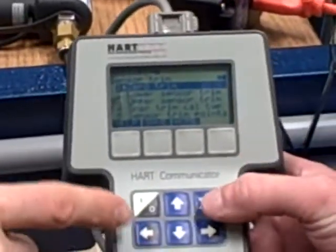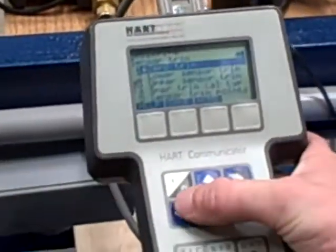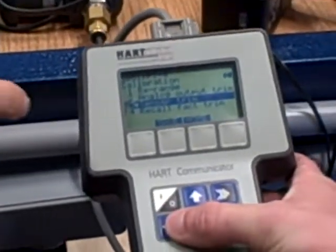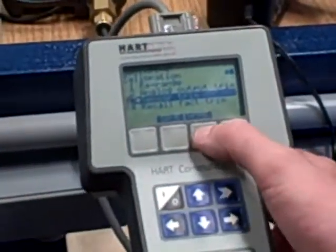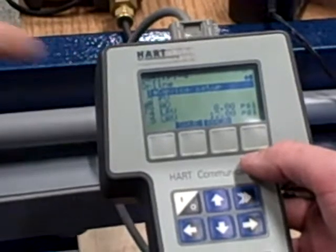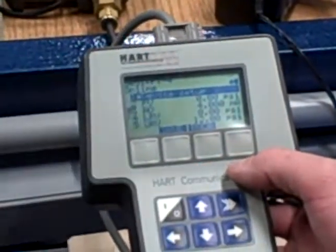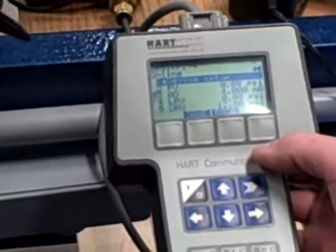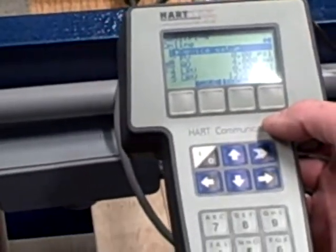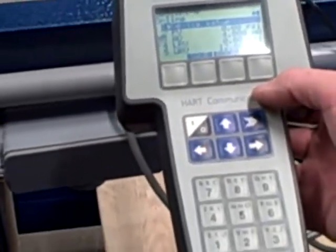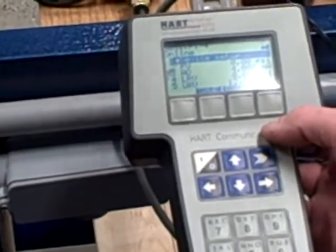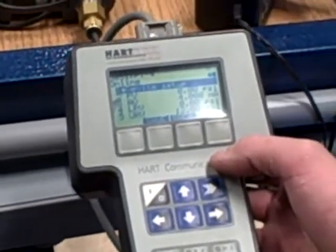We can go back into the home menu. Go ahead and hit the back left button and go to the home button right there. And now we should see under process variable it says 0.00 psi. We're sending it 0 psi and it knows that it's 0 psi. So that's verifying that our zero trim indeed worked. It is correctly reading zero.